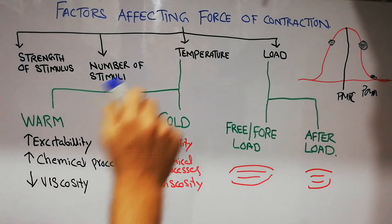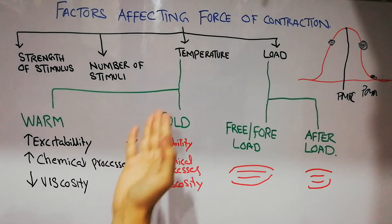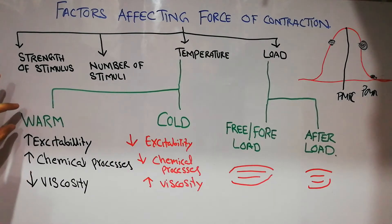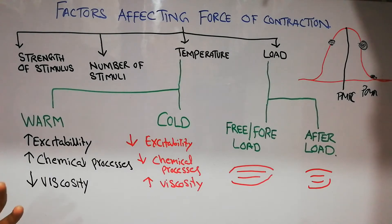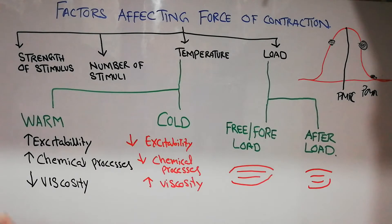The effect of temperature and load are very simple. Increasing the temperature increases the force of contraction and decreasing the temperature decreases the force of contraction. Because when the temperature increases, in a warm environment, the excitability of the muscle increases. If the muscle is more excitable, the chances of contraction will be greater.